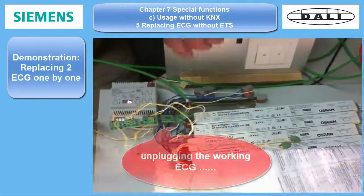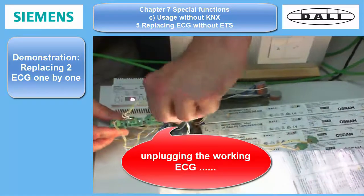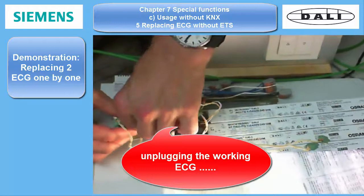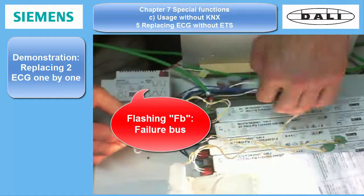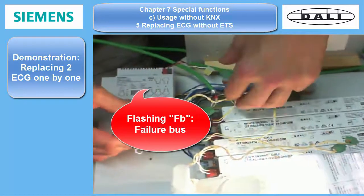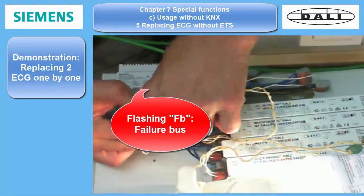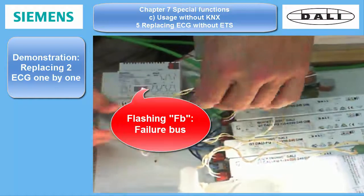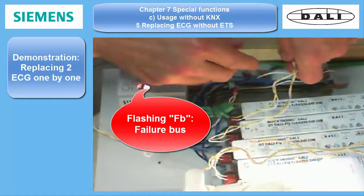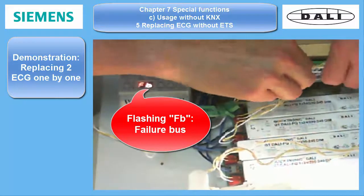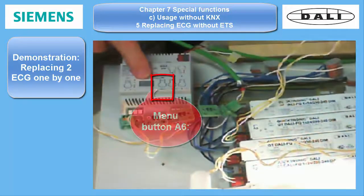Now I simulate the dropout of both ECG by unplugging them from the DALI bus. Watch the front side display of the DALI Gateway. From B, bus active, it turns to FB, failure bus, signalizing that something is wrong. To find out what is wrong,